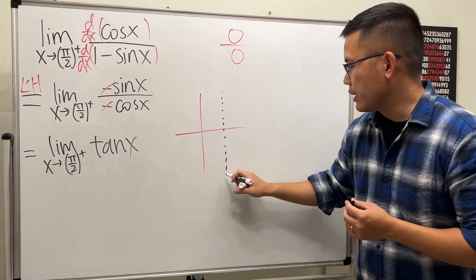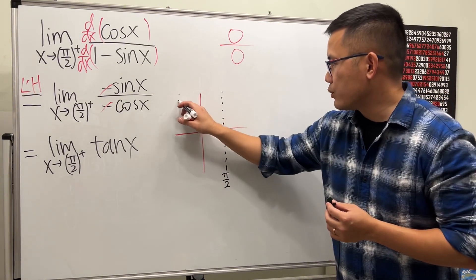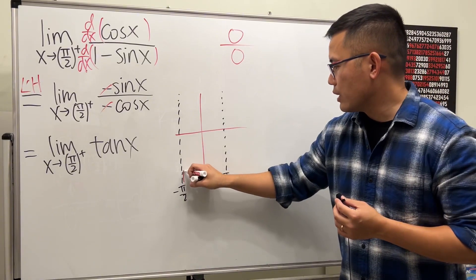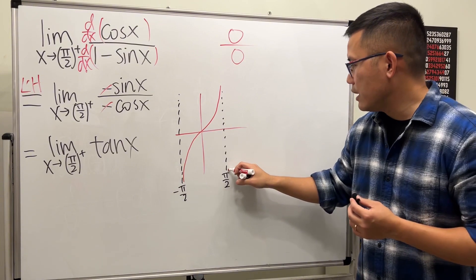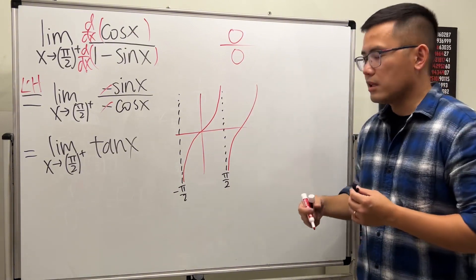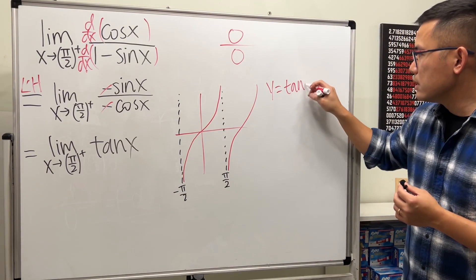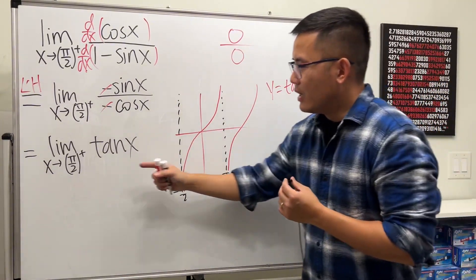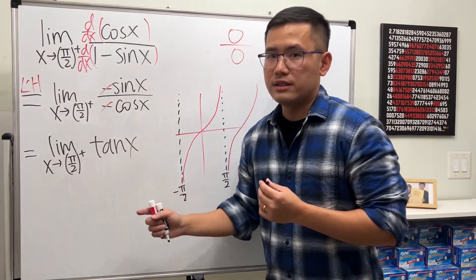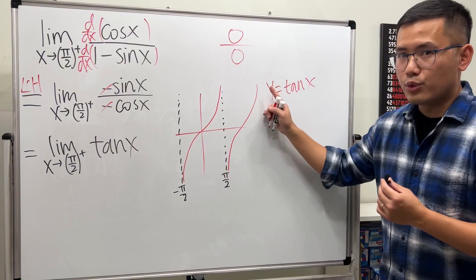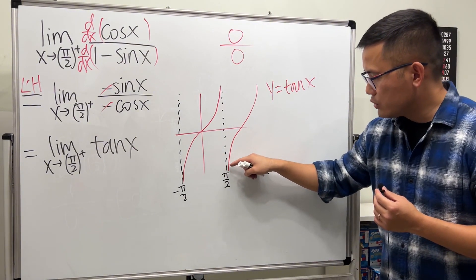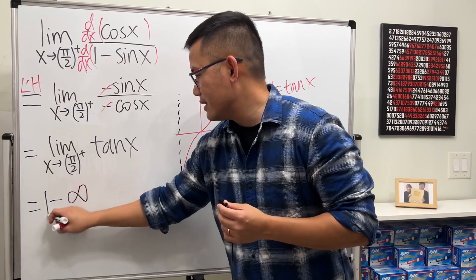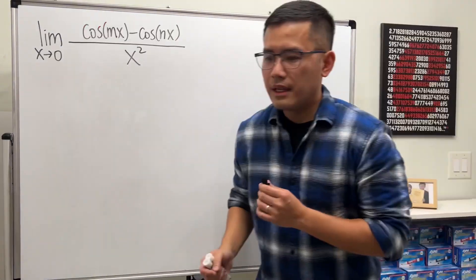The graph of tangent x has vertical asymptotes, with the first one at π/2 and another at negative π/2. The graph goes up and then down around these asymptotes. With this graph in mind, what is the limit as x approaches π/2 from the right? π/2 is at the asymptote — using your right hand, you can see the curve goes straight down. Therefore the answer is negative infinity.